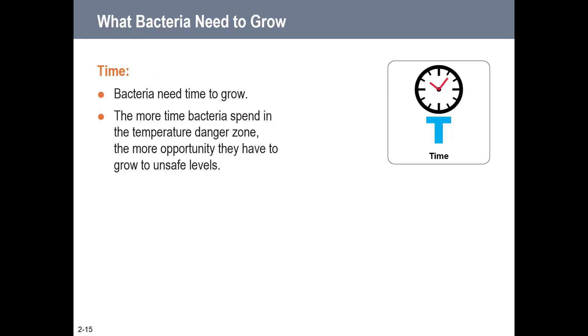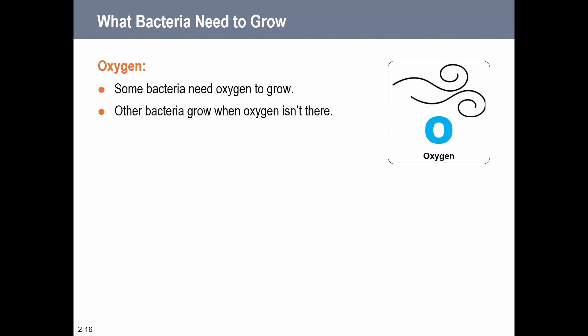The second T stands for Time. Bacteria need time to grow in the danger zone - the more time food spends in the danger zone, the more opportunity bacteria have to grow to unsafe levels. Leaving chicken out at room temperature for 20 minutes is very different than leaving it out for 4 hours in terms of bacterial growth.